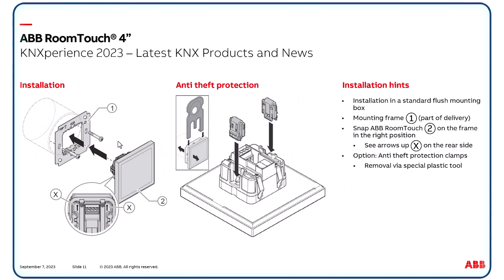Some words about installation. As mentioned, it can be installed in a flush mounting box in the wall. Just fix the mounting frame on the box — the frame is part of the delivery. Then snap the ABB Room Touch onto the frame in the right position, meaning the arrows on the rear side point upwards. As an option, anti-theft protection clamps can be inserted, so removal of the device is only possible via a special plastic tool. Both are available from ABB.